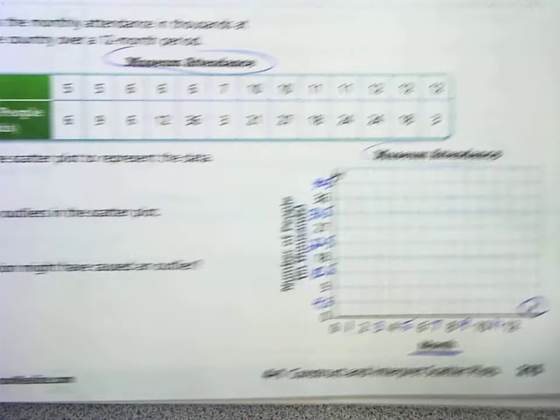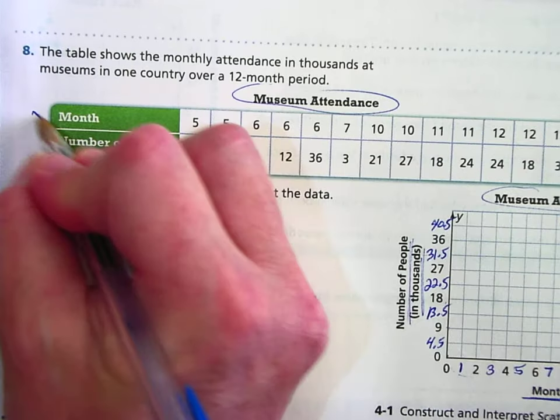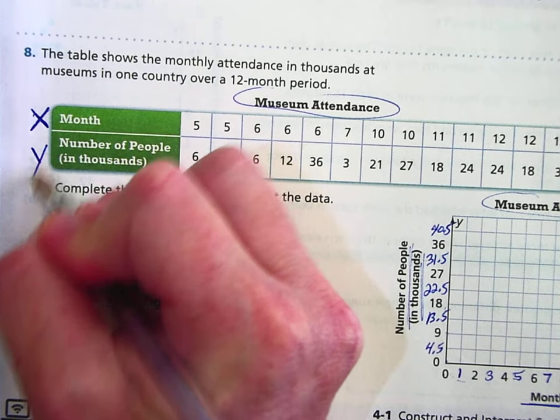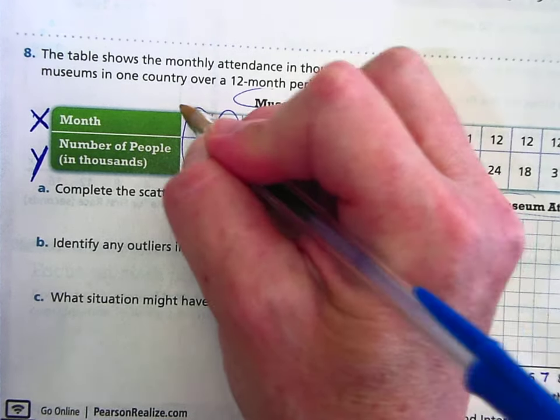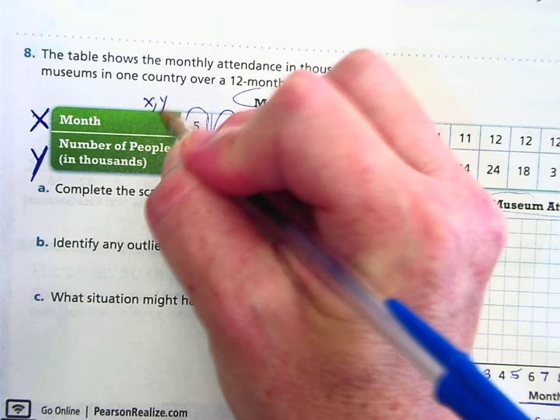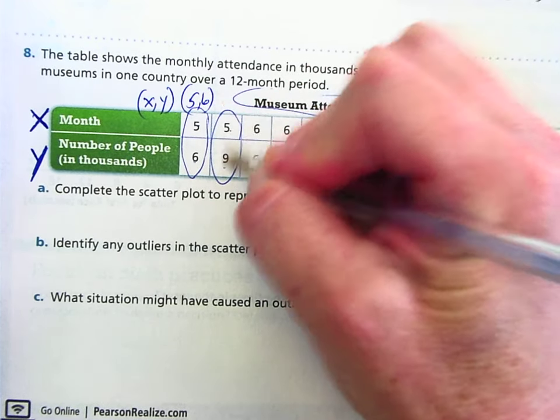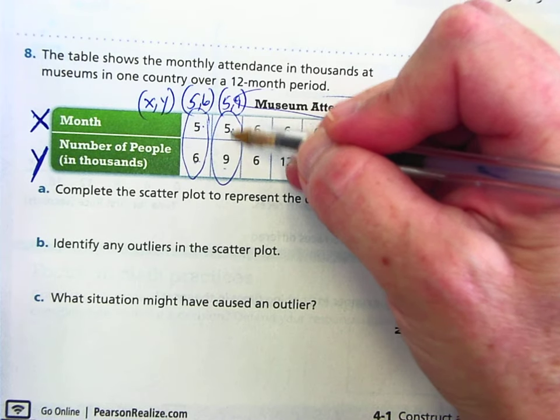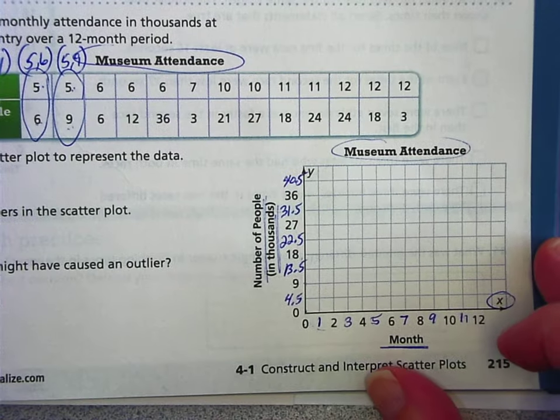Now, this is a coordinate plane. So these are ordered pairs. The month of the year was our X axis and the thousands of people are the Y axis. So five, six would be an ordered pair. In month five, there were 6,000 people. And then in month five, there were 9,000 people. So we're going to graph these. When you construct them, you have to graph those points.